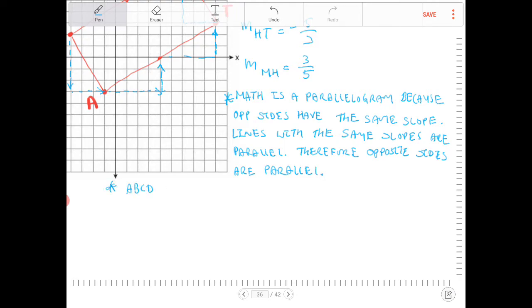ABCD is a rectangle because adjacent sides have negative reciprocal slopes. And I'm going to demonstrate this.